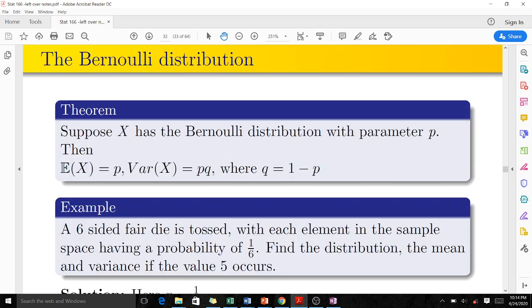There is a theorem here. The theorem says suppose X has the Bernoulli distribution with parameter p. Then the expectation of X is the same as p, which is the probability of success. The expectation of X is the same as the expected value or the mean. And our variance of X is pq, where q is 1-p, the probability of failure.